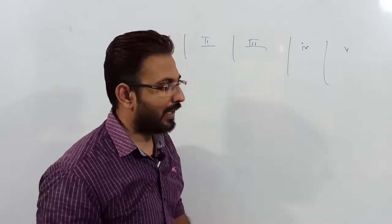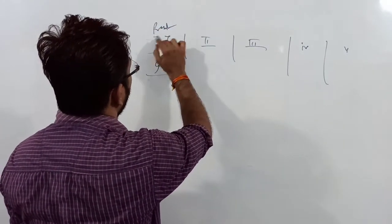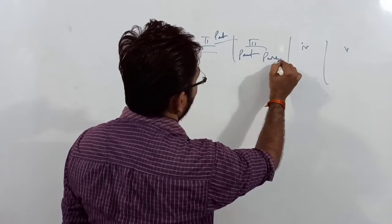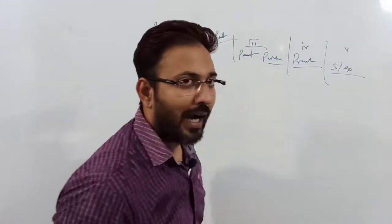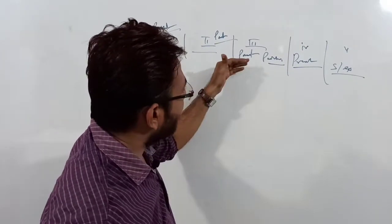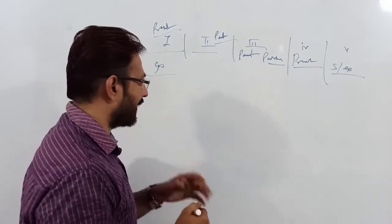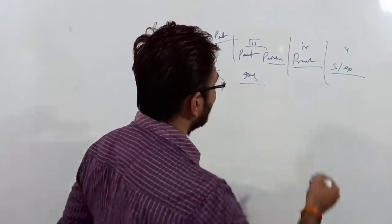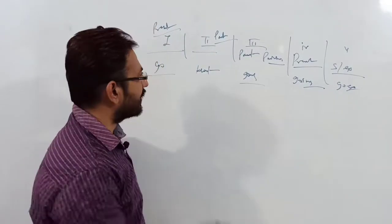The first form is the base verb — for example, 'go.' This is the present form. The second form is the past form — 'went.' The third form is the past participle — 'gone.' The fourth form is the present participle — 'going.' The fifth form adds -s or -es — 'goes.' So the five forms of 'go' are: go, went, gone, going, goes.